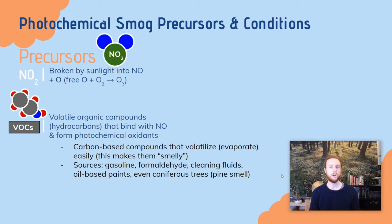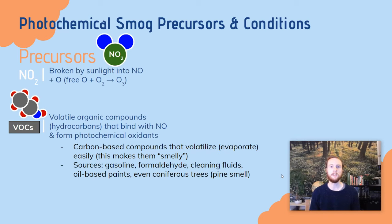We should also know that VOCs are carbon-based — that's what an organic compound is. These are going to be things like hydrocarbons, and sources include gasoline, formaldehyde, and basically anything involving petrochemicals or plastic production. There are also some natural sources of VOCs, which would include coniferous trees or pine trees. Think of that pine smell when you're out in the forest — that's an example of a volatile organic compound being given off by the tree.